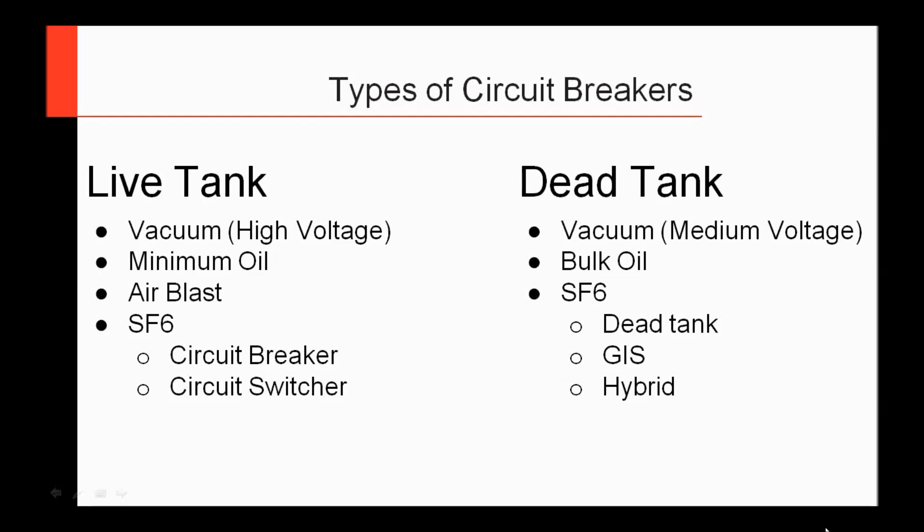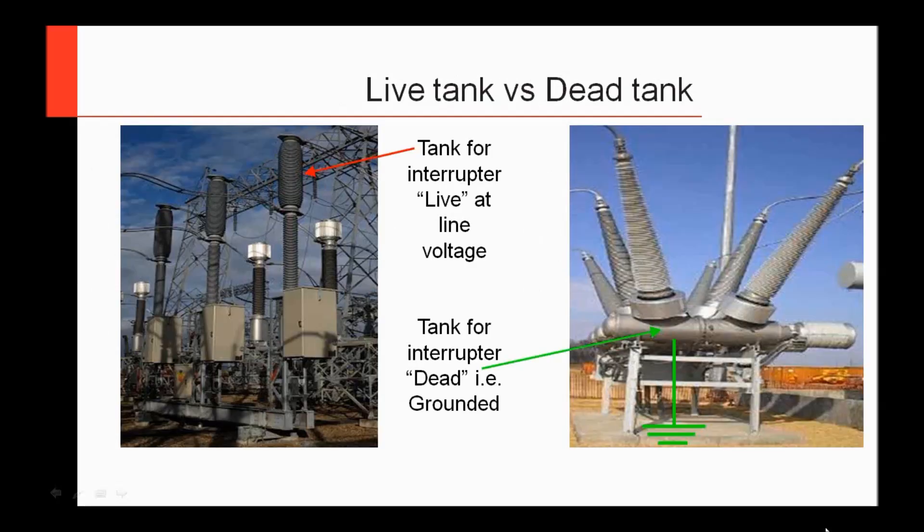You'll notice that both live tank and dead tank have very similar insulating mediums. You can have vacuum in live tank and vacuum in dead tank. In live tank, you'll have something called a minimum oil circuit breaker, whereas in dead tank you'll have a bulk oil circuit breaker. There's something in live tank called air blast that has nothing analogous in dead tank. But you'll have SF6 circuit breakers and circuit switchers in live tank, and dead tank GIS or hybrid-type circuit breakers in the dead tank realm.